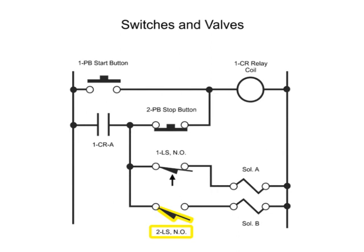The other limit switch in this diagram is 2LS. It also is a normally open switch. However, at the start of the circuit, it is in the open position and thus has no arrow. A holding relay is a necessary part of this circuit.